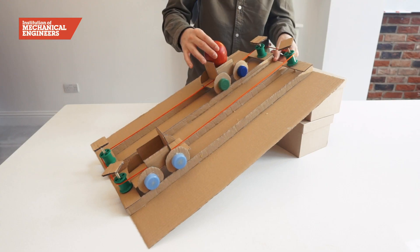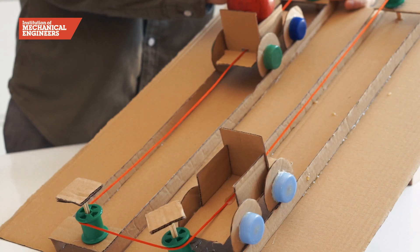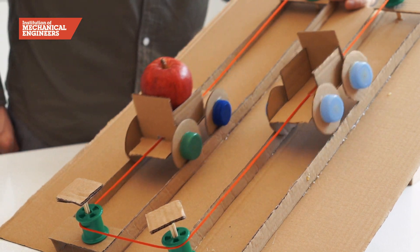Now the trains can be loaded with cargo and we can see how the force of gravity pulling the heavier train to the ground lifts the other train up to the top of the track.